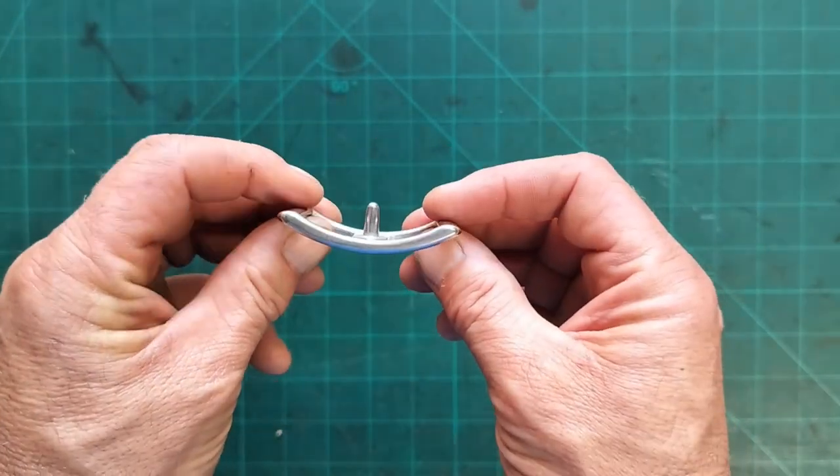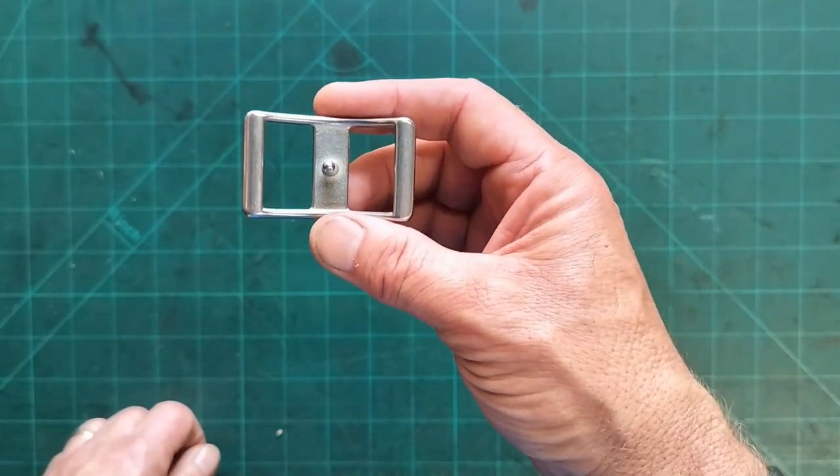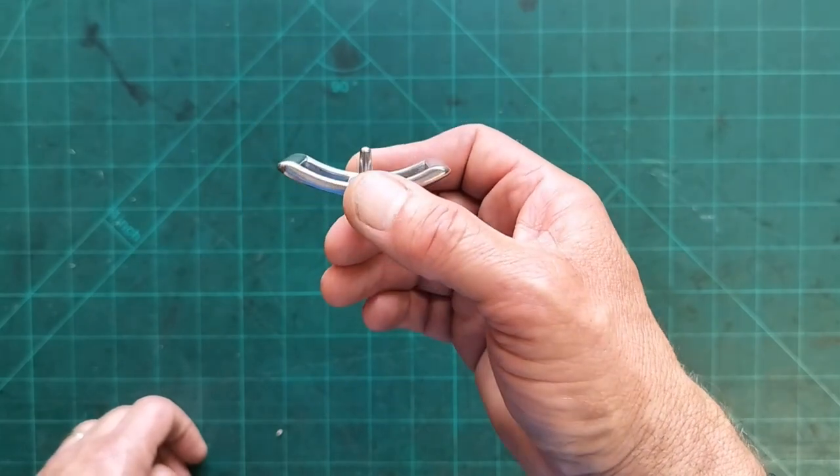Simple pin in the middle, bit of a curve to it. Doesn't have a lot on show when it's all buckled up, it looks really nice. It's a nice sort of quite fancy dress buckle if you want to have it as that type.